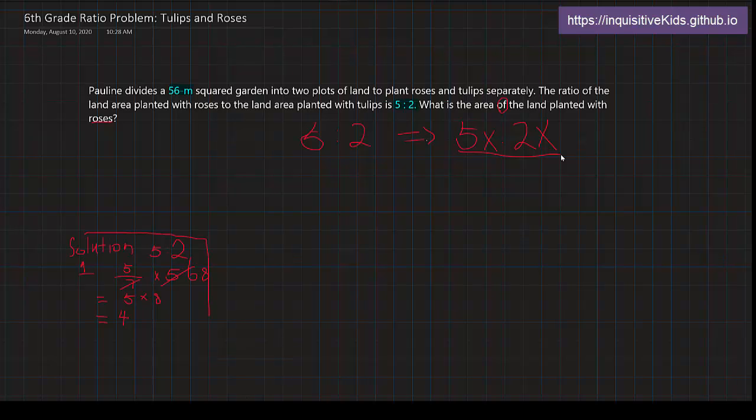We know that these two units, so this amount plus this amount of the ratio added together, is going to become 56. Because this is the land that's roses, and this is the land that's tulips. And if we want to put two amounts together, what do we do? Of course, we add them together to merge the two amounts together. 5x plus 2x is equal to 56. This means that the area of the land planted with roses plus the area of the land planted with tulips is equal to the whole mass of the garden, 56.